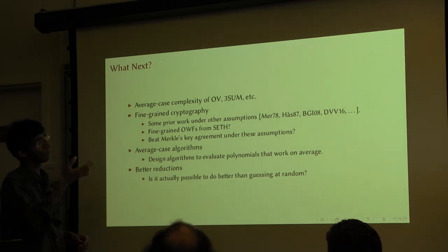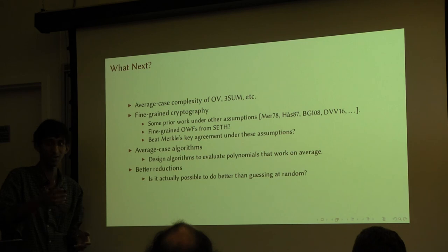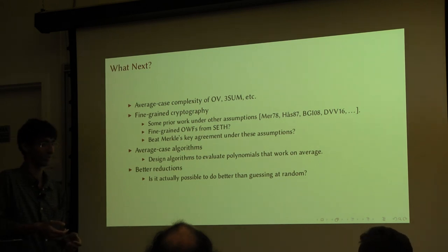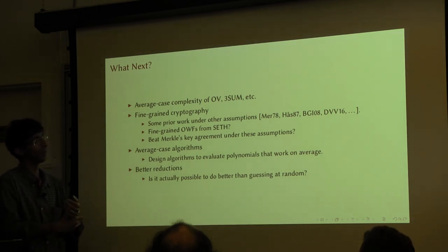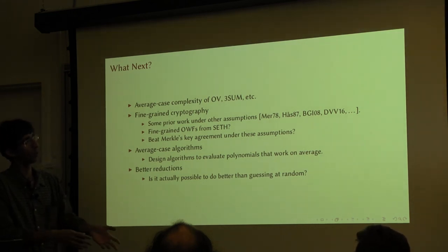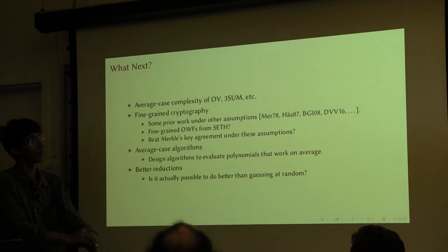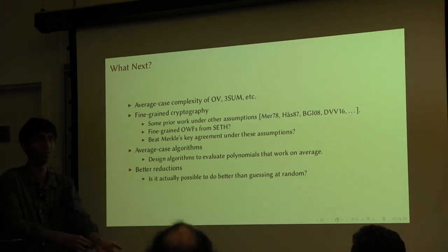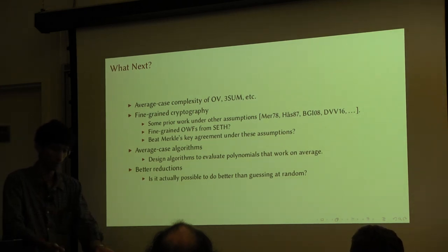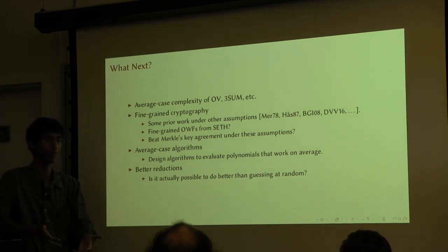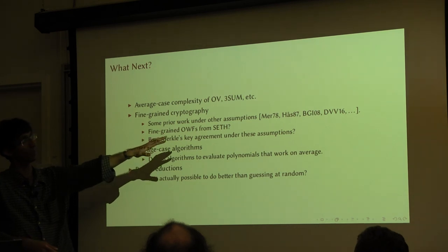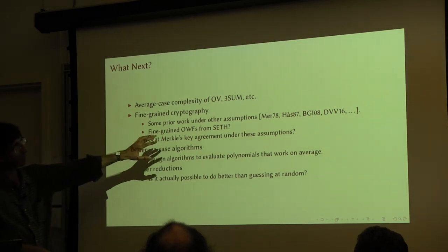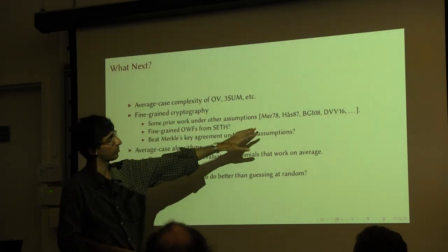So this is sort of where cryptography started out — in the beginning, people were asking these questions: can you construct things which you can compute in time n but you can't break in time n-squared? It's only later that cryptography moved to adopt the idioms of complexity theory and said let's work with polynomial time algorithms. But this sort of question — about quadratic versus linear time — has been asked right from the beginning, and there has been work in different dimensions. Like Merkle's paper, as he mentioned.